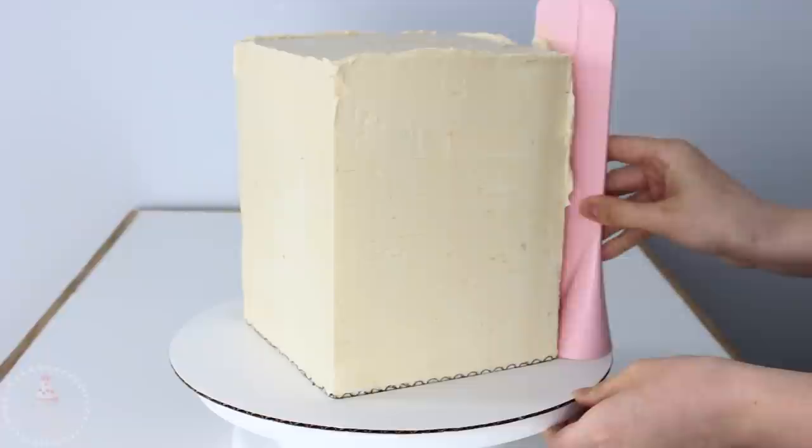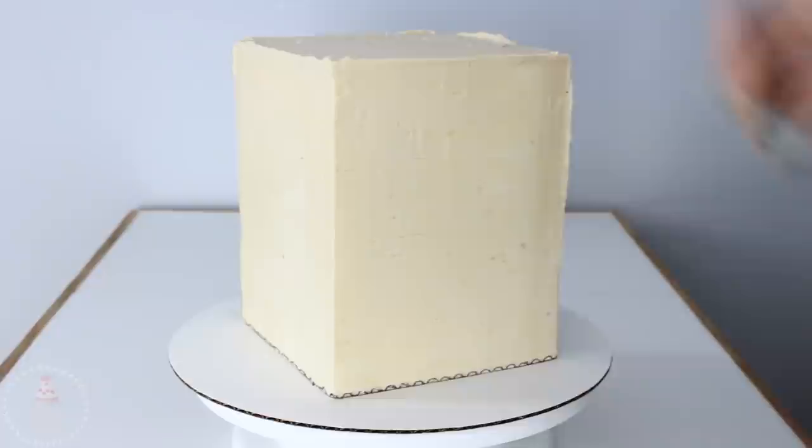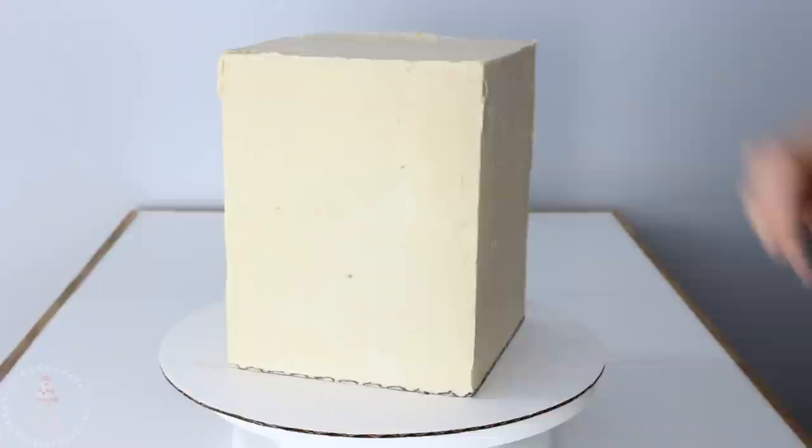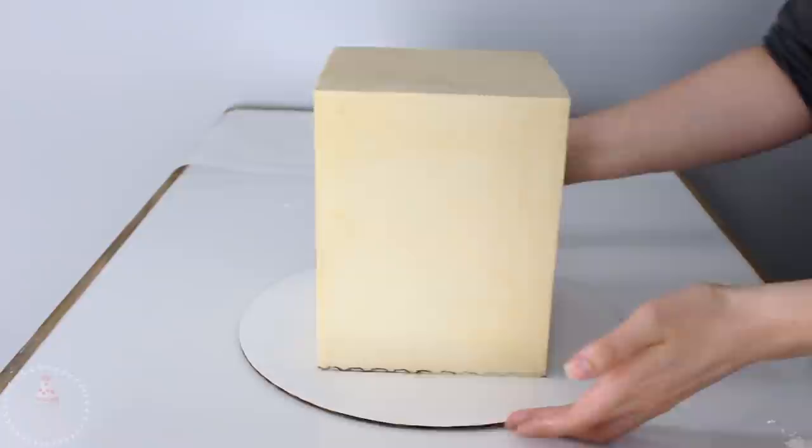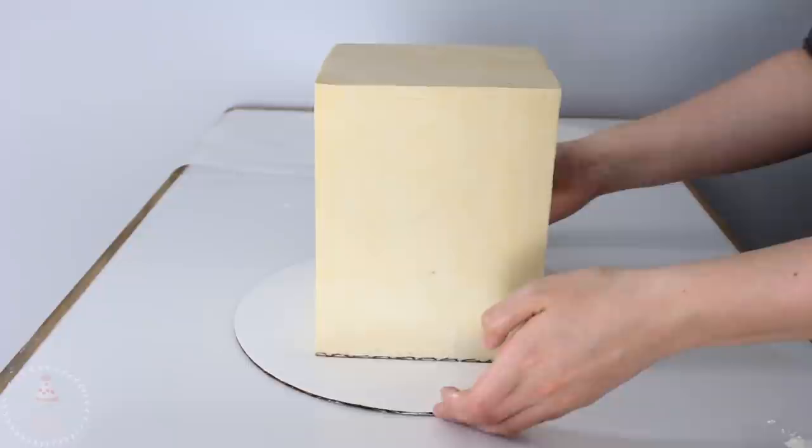Square cakes and rectangle cakes are especially tricky. It's one of those things where you're going to get out of it how much you put into it. It took me probably about 45 minutes altogether of scraping and reapplying buttercream and scraping again until I was finally happy with it, and then I popped my cake in the fridge to chill for about an hour. You want to make sure it's really set and really firm.